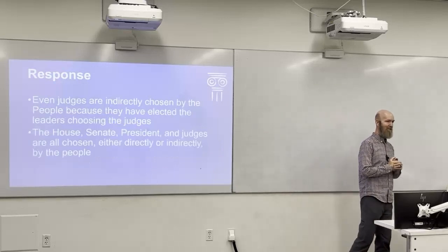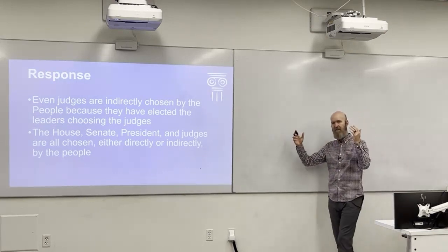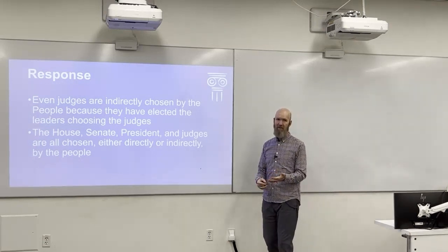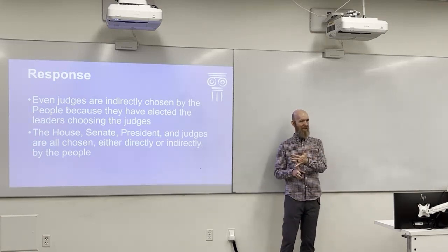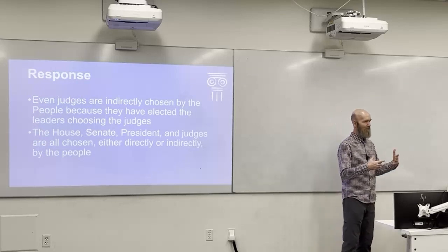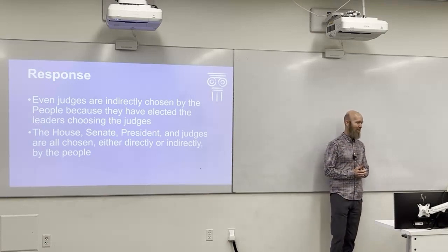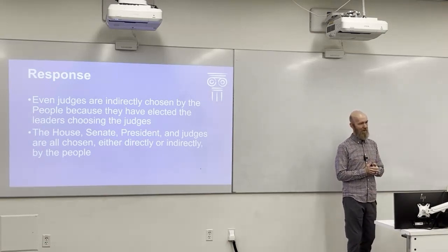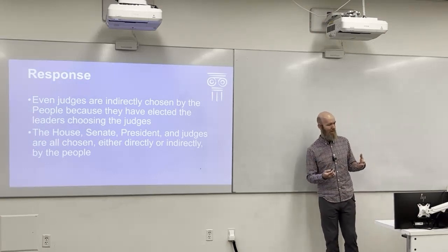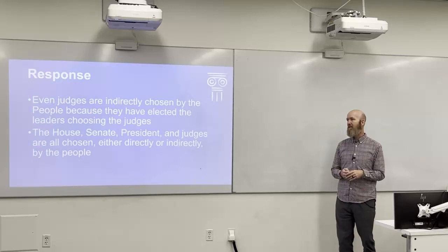Even judges in the judicial branch still represent the people in a sense. You don't elect judges directly, but you elected the president and senators — the president nominates judges and the Senate approves them. So people you elected are selecting the judges. Therefore judges still represent the people indirectly. The House, Senate, president, and judges are all chosen either directly or indirectly by the people, keeping the national government closely tied to the people.